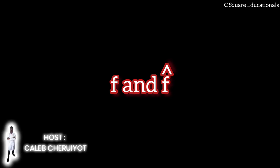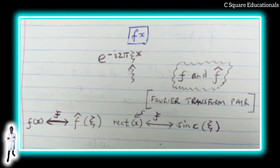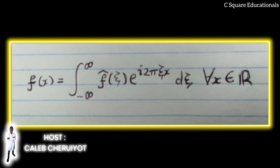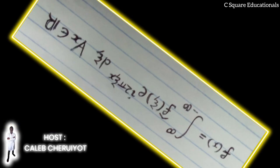A common notation for designating transform pairs is: f(x) ↔ f̂(ψ), and therefore rect(x) ↔ sinc(ψ). Fourier series cannot represent non-periodic waveforms; however, the Fourier transform is able to represent non-periodic waveforms as well. It achieves this by applying a limiting process to lengthen the period of any waveform to infinity and then treating that as a periodic waveform. The actual Fourier series synthesis formula is: f(x) = Σ c_n e^(i2πnx/P) for n from −∞ to ∞. The Fourier transform extension is: f(x) = ∫_{−∞}^{∞} f̂(ψ) e^(i2πψx) dψ for x ∈ ℝ.